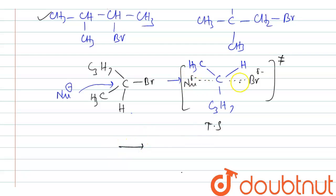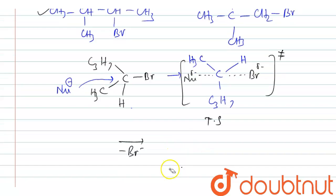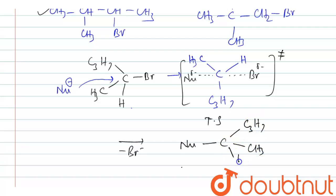The compound loses bromine — the leaving group — and there is inversion. Inversion will always occur in SN2, but if there is a chiral center, we can observe that inversion. Like an inverted umbrella, inversion takes place — this is known as stereochemical inversion. If the starting material is R, the product will be S, and if it is S, the product will be R. This inversion is also known as Walden inversion.